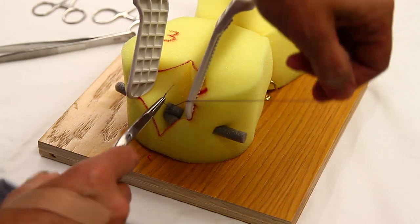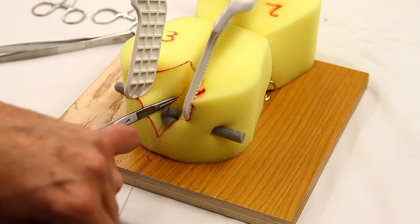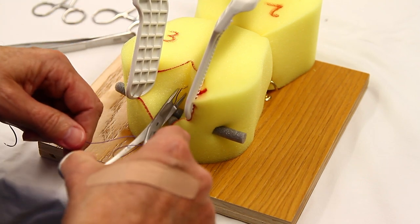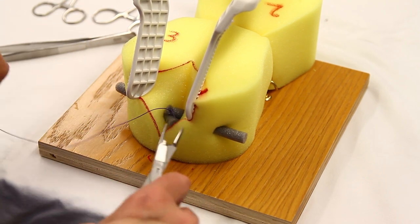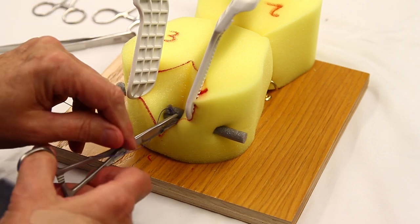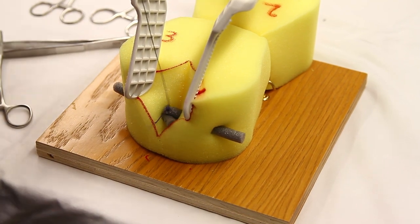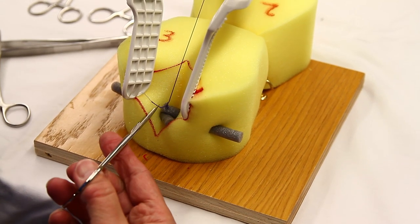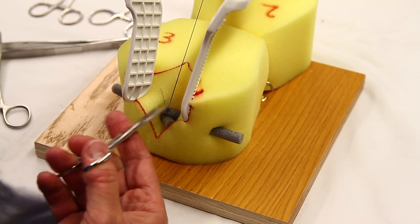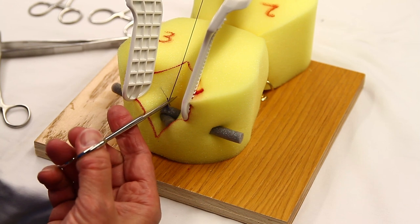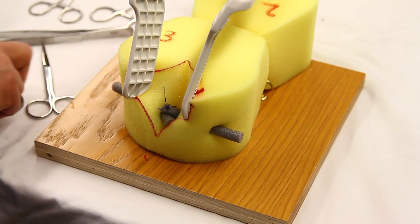Like I said with vicryl, one of the knots needs to be a double knot. Vicryl likes to untie itself. Try to put square knots down and put at least three in and then you can trim that short leaving at least that half a centimeter so it can't come untied.